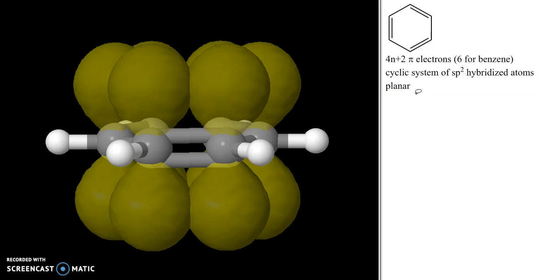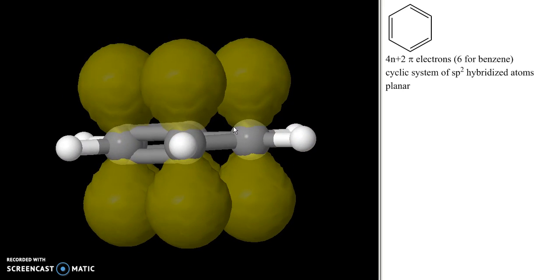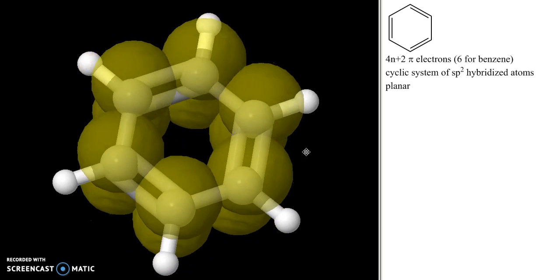We can look at the orbitals in benzene. We can see we have overlapping p orbitals. We have electron density above the plane and below the plane, so we can fairly easily recognize that benzene is aromatic.